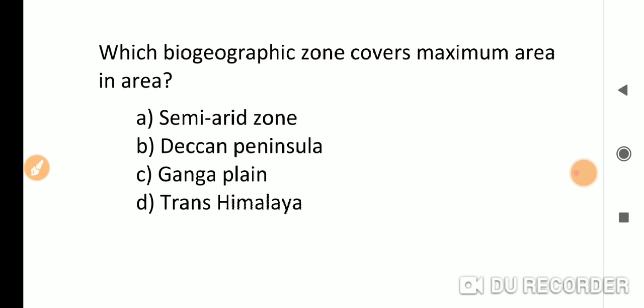Which biogeographical zone covers maximum area? The correct answer is Deccan Peninsula, which covers approximately 42% area.